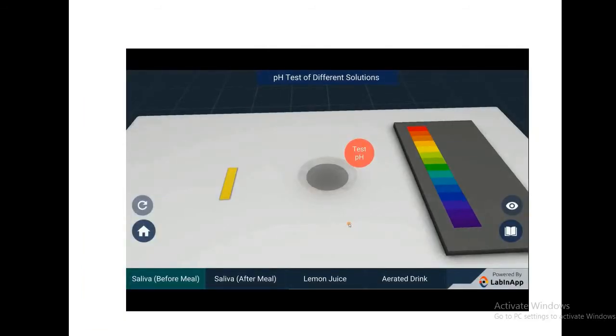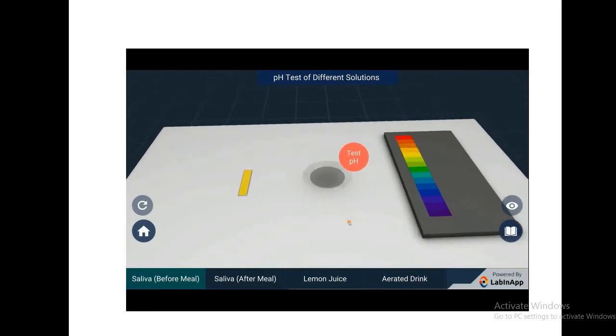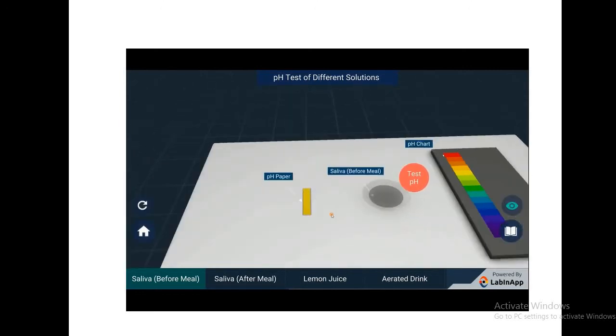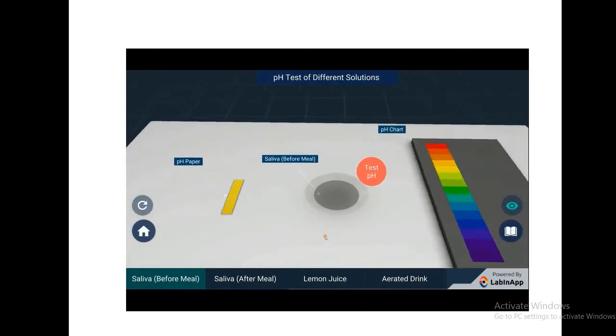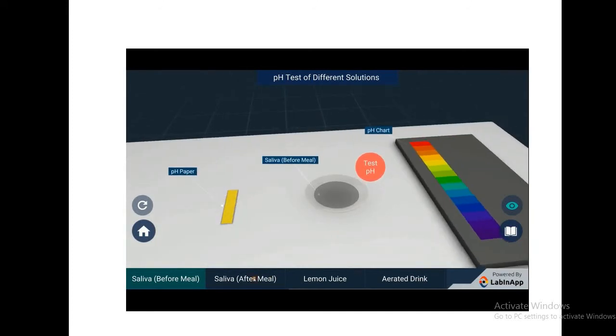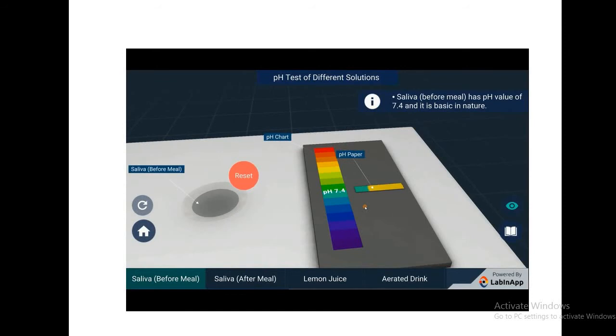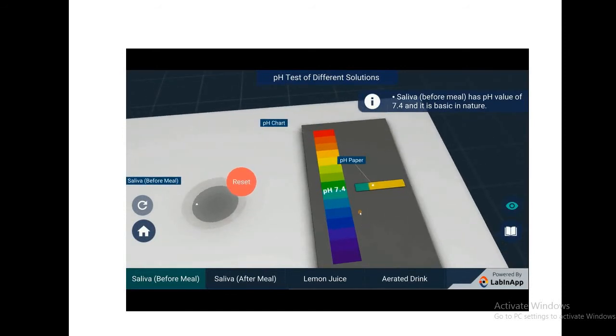Let's study pH of different solutions. For this, we have to take pH paper and different types of solutions. Take a pH paper and dip it in a solution and observe. You will see change in paper color and compare that with pH chart to know the pH value. Do the same for different solutions.